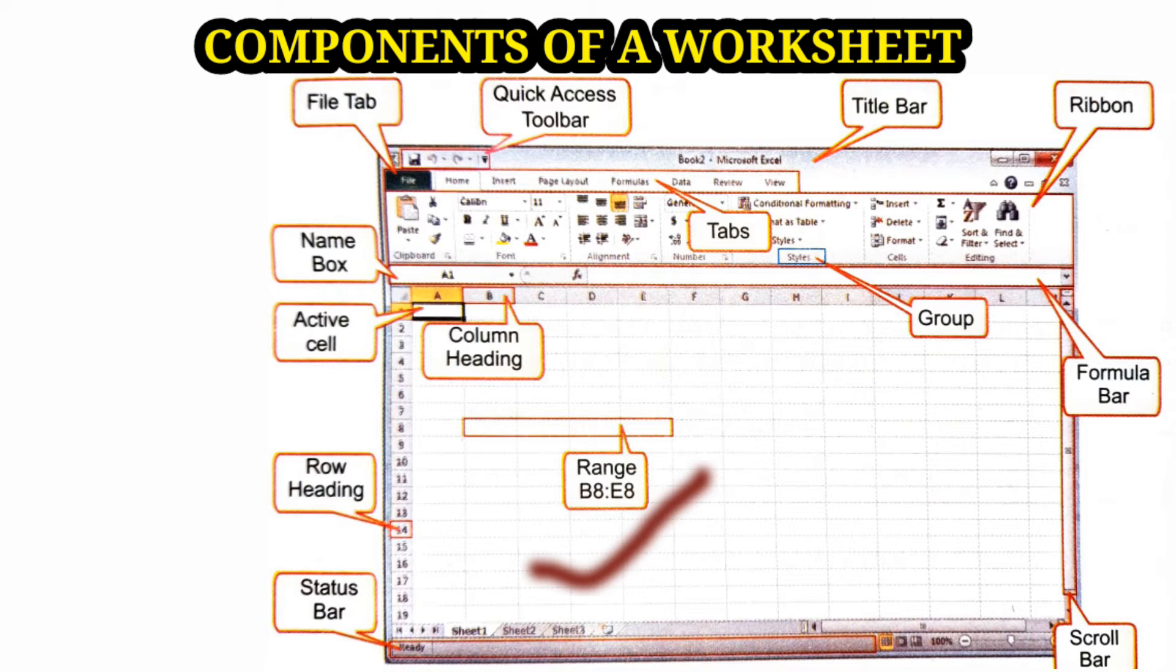Name box - the name box is located just above the column heading on the left side of the window. Formula bar - the formula bar is located to the right of the name box.